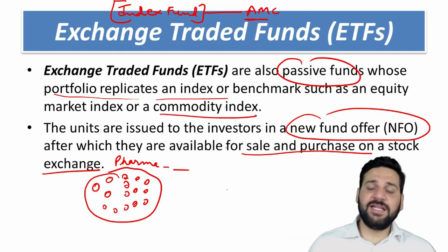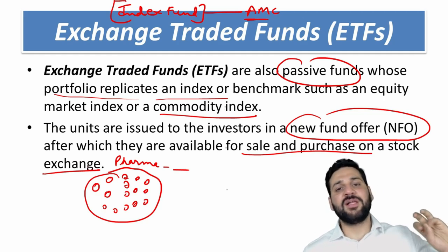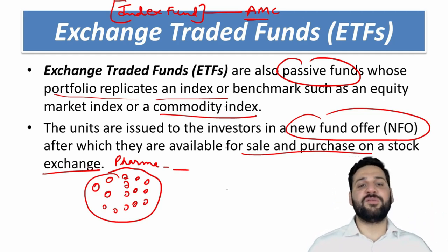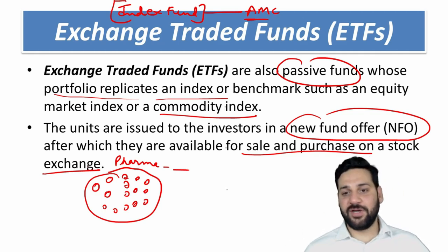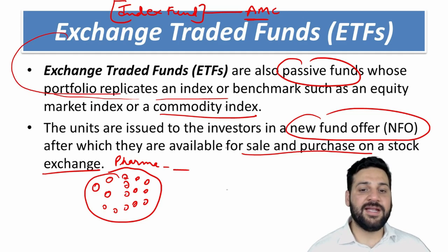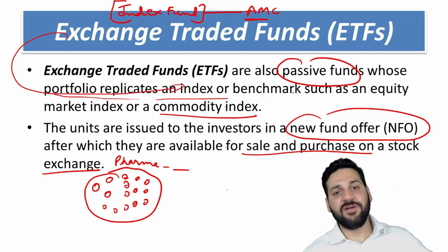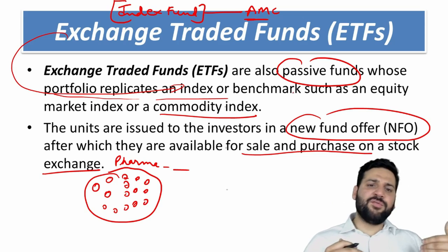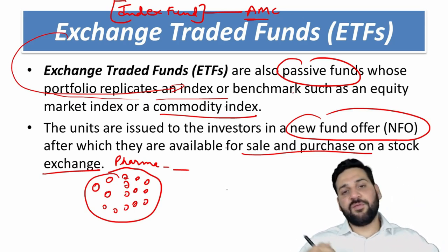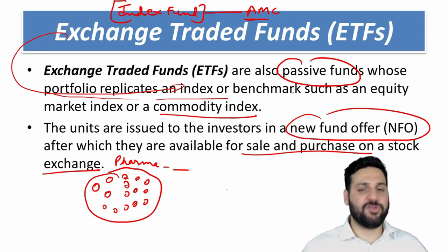So an ETF is traded on a stock exchange, while for an index fund you need to buy or sell through an asset management company. That is the basic difference between an index fund and an exchange traded fund. Otherwise, the ETF is also replicating an index — it may replicate the Sensex or the S&P 500. The key difference is: index fund — go to AMC; ETF — go to the stock exchange.